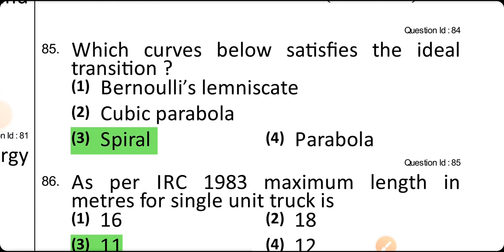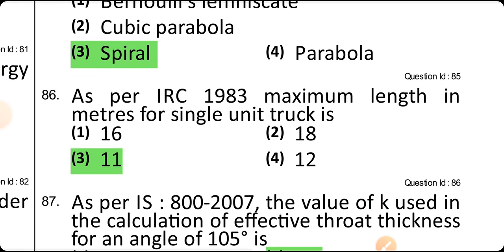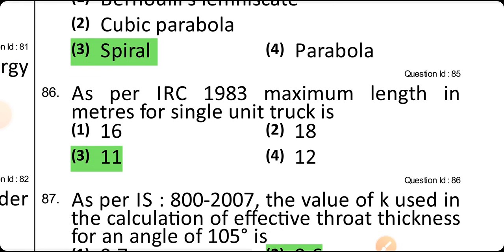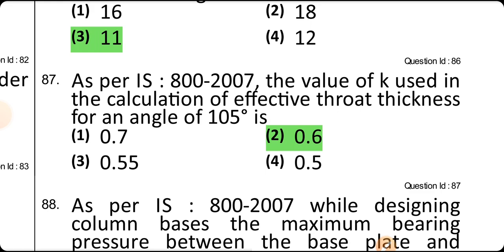The curve that satisfies ideal transition conditions is the spiral curve. As per IRC, the maximum length for a single-unit truck is 11 meters. As per IS 800-2007, the value of K used in calculating effective throat thickness for an angle of 105° is 0.6.